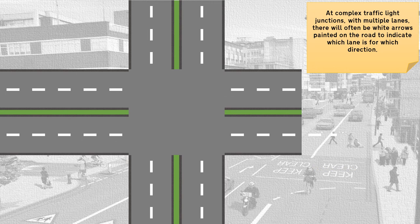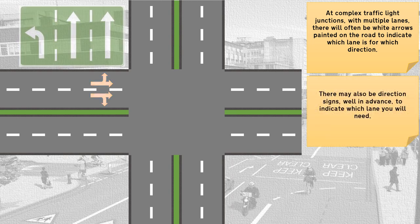At complex traffic light junctions with multiple lanes, there will often be white arrows painted on the road to indicate which lane leads to which direction. There may also be direction signs, well in advance, to indicate which lane you will need.